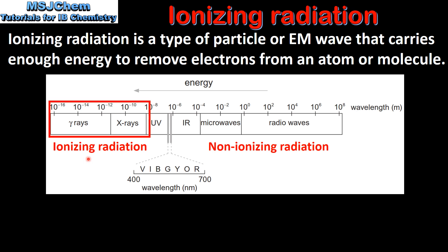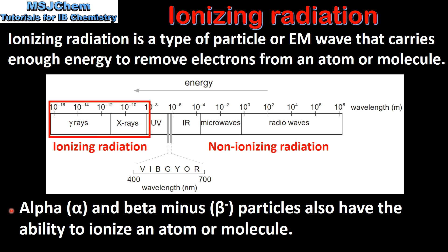Here we can see the types of electromagnetic wave that are classified as ionizing radiation. They are high-energy UV, X-rays and gamma rays. In addition to these, alpha and beta minus particles also have the ability to ionize an atom or molecule.